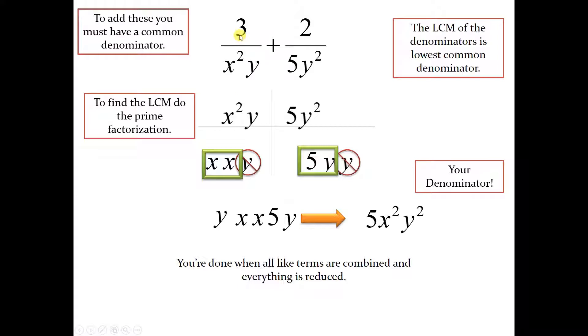The way you do it is this fraction right here is going to be multiplied by the leftovers right over here. You see, if I take x squared y and I multiply by 5y, I'm left with 5x squared y squared. Same thing here, 5y squared times the leftovers, x squared, there you have it.